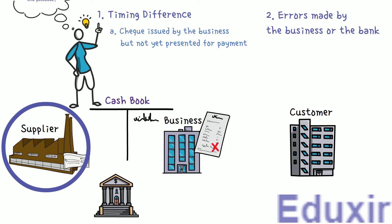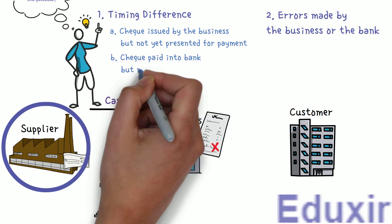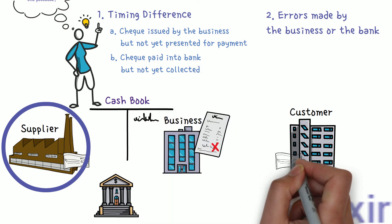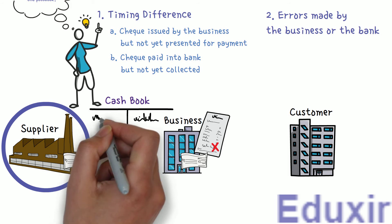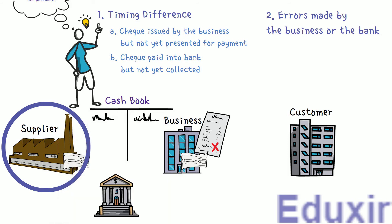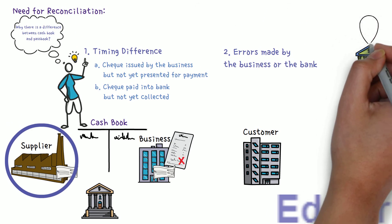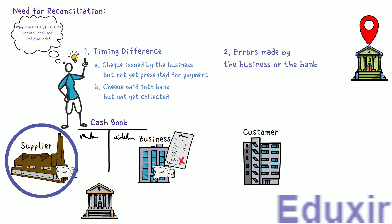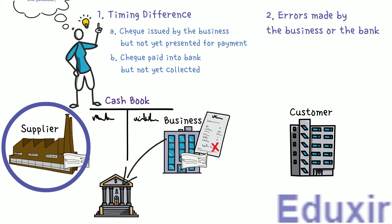The second reason for timing difference is checks paid into the bank but not yet collected. When the business receives checks from its customers or debtors, they are immediately recorded on the debit side of the cashbook, so the cashbook shows more amount available in the bank. These checks could be from a bank not in the same city or town, or from a different branch. In such cases, the bank may not have collected the check amount by the time the bank statement is received, causing a difference between the cashbook and the passbook.